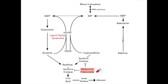Now let's take a look at adenine. The free base adenine can be converted into its nucleotide form AMP by the enzyme adenine phosphoribosyl transferase, or APRT for short, with the addition of PRPP — just like the earlier salvage reactions.